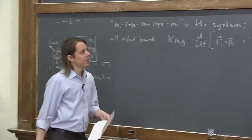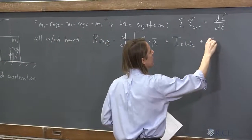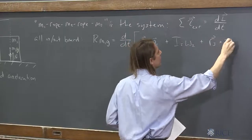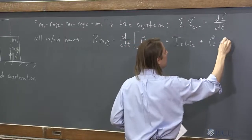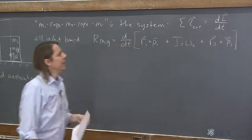And then, of course, the third one is R3 cross P3. The third one's momentum.